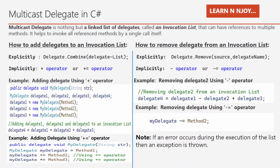Similarly, if we want to remove a delegate from the invocation list, we can do it explicitly or implicitly. In the explicit way, we use the Remove method of the delegate and pass the source (the invocation list) and the delegate we want to remove. If we go for the implicit approach, we have two options: the minus operator or the minus-equal-to operator. For example, removing delegate2 using the minus operator: delegate1 - delegate2 + delegate3 — this removes delegate2 from the invocation list.